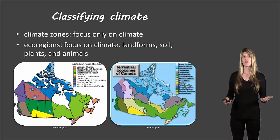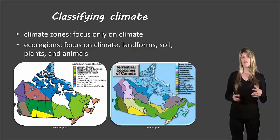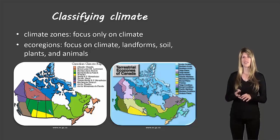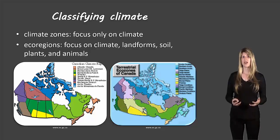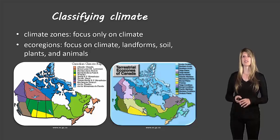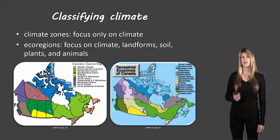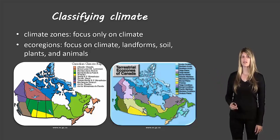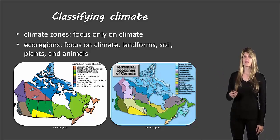In order to talk about climate we need a little bit of terminology. There are two different ways to classify climate. The one we usually use is climate zones, which looks only at the climate itself — things like temperature, wind, precipitation, and so on. Then there are ecoregions, which also classify climate but include more than just climate — they also include landforms, soil, plants, animals, and so on. You can see from the two pictures what our ecoregions and climate zones look like in Canada. For the rest of this course we'll focus on climate zones, but be aware that there are different ways of classifying climate.